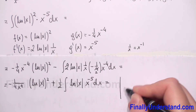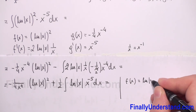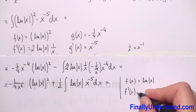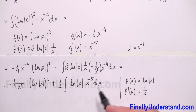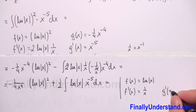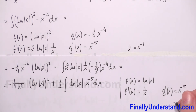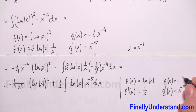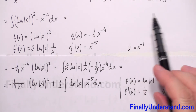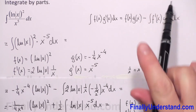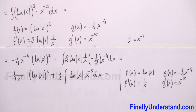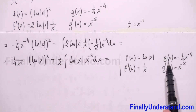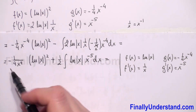So we have the integral of natural logarithm of |x| times x to the negative 5 power. To reduce this natural logarithm, I will set f(x) equal to the natural logarithm of |x|, so f'(x) equals 1/x. Whatever is left is g'(x) equal to x to the negative 5, so g(x) equals negative 1 over 4 x to the negative 4. One more time we will use the formula for integration by parts.